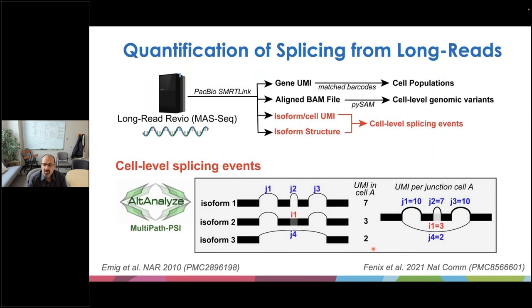We designed an informatics workflow to quantify splicing differences from isoform-level data in single cells by extracting individual exon-exon and exon junction reads per cell across all samples for splicing calculation in our software AltAnalyze. For example, if you take a single cell with three different isoforms expressed with different read counts, you can extrapolate which junctions are present based on the sum of junction counts across different isoforms — for calculating splicing inclusion values, intron exclusion values, or even alternative polyadenylation for these isoforms.